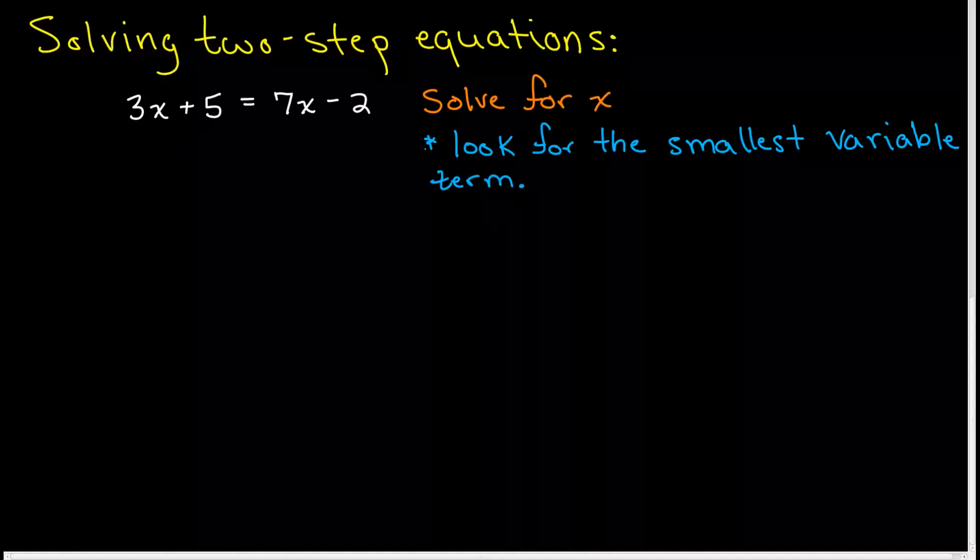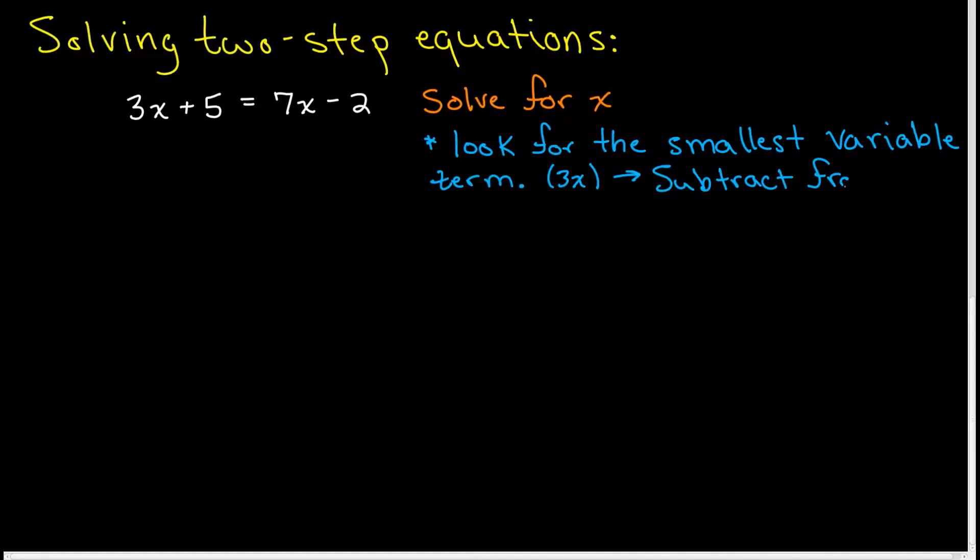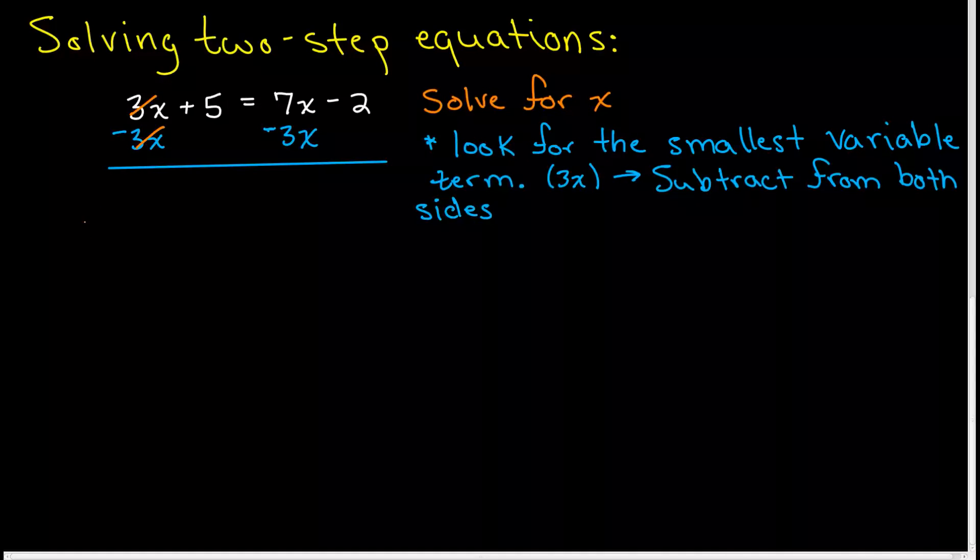In this case, our smallest variable term is 3x, and it's positive. So we're going to subtract this 3x from both sides. We're subtracting because this is positive, so we're going to do the opposite. When you do this, the way this works out, this term that you added or subtracted will always cancel out. It will always disappear.